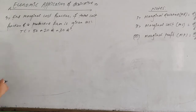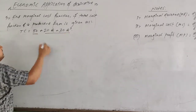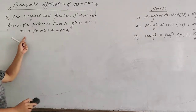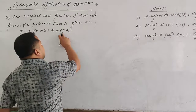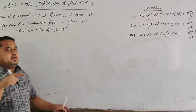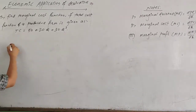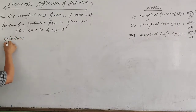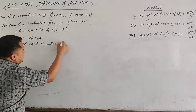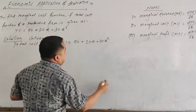The total cost function is defined as TC equals 50 plus 20Q plus 30Q squared, where 50 is the total fixed cost and the remaining terms represent the total variable cost. This is equation number one.